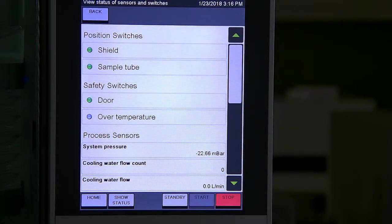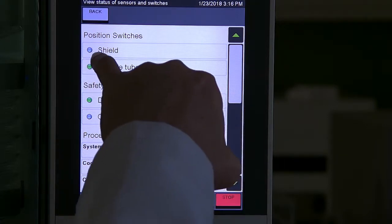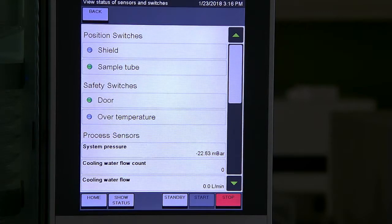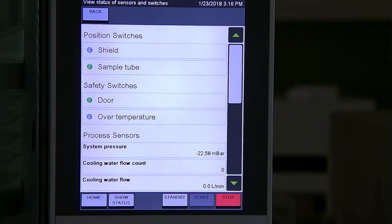In the sensors and switches screen we have a number of sensors. If I open this door for the sample tube you can tell that the shield sensor has gone gray rather than green.